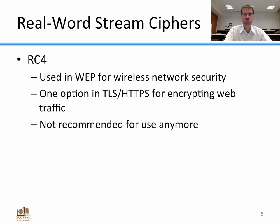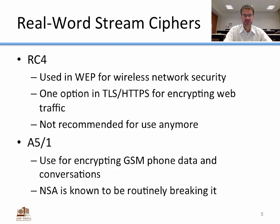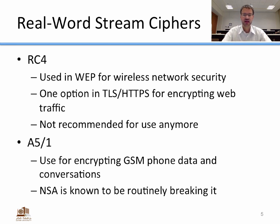Another real-world stream cipher is A5/1, used for encrypting GSM phone data and conversations — specifically to encrypt data before your phone sends it wirelessly to the operator. The NSA is known to routinely break A5/1, which was released as part of the Snowden leaks. So again, it's another stream cipher not recommended for use.